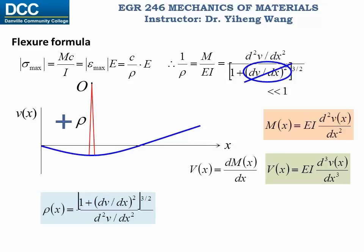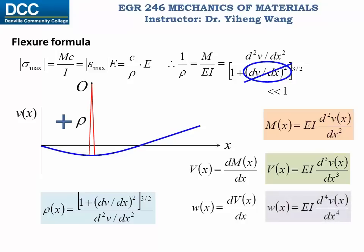Furthermore, since the load intensity function w(x) is the derivative of the shear force function, the load intensity function equals EI times the fourth derivative of the deflection function. This is normally known as the Euler-Bernoulli equation.